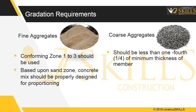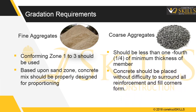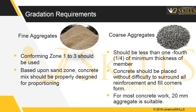Coarse aggregate size should be less than one-fourth of the minimum thickness of the structural member. Coarse aggregate size should be such that the concrete can be placed without difficulty, so as to surround all the reinforcement and fill the corners of the formwork. For most concrete work, 20 mm aggregate is suitable.